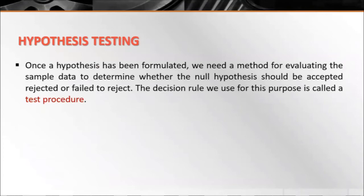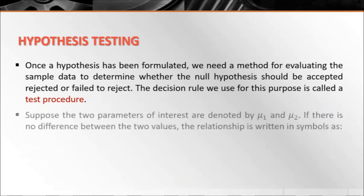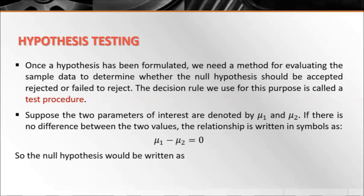Once a hypothesis has been formulated, we need a method for evaluating the sample data to determine whether the null hypothesis should be accepted, rejected, or failed to reject. The decision rule used for this purpose is called a test procedure. Suppose two parameters of interest are denoted by μ₁ and μ₂. If there is no difference between the two values, the relationship is written in symbols as μ₁ - μ₂ = 0. So the null hypothesis would be written as H₀: μ₁ = μ₂.